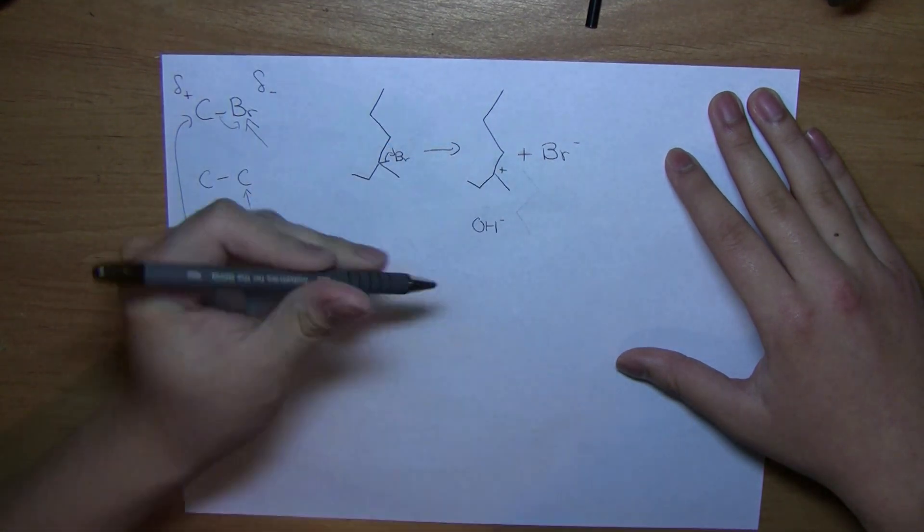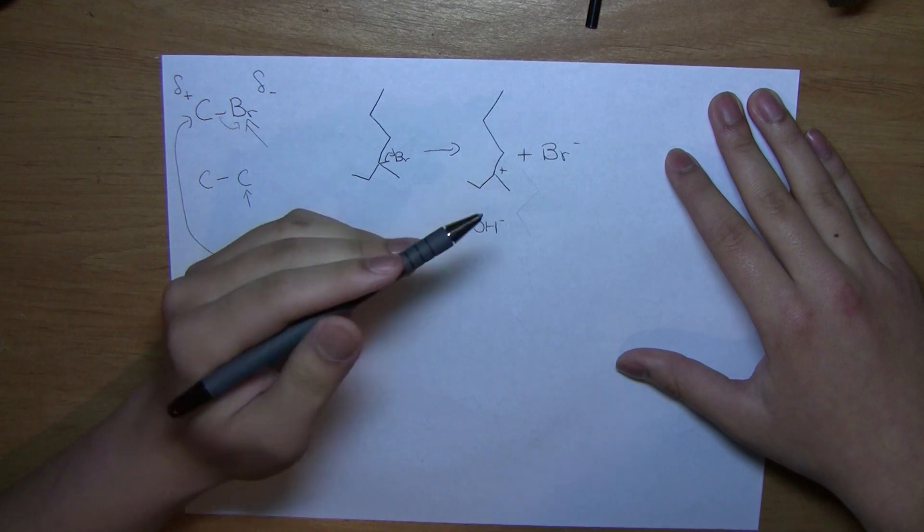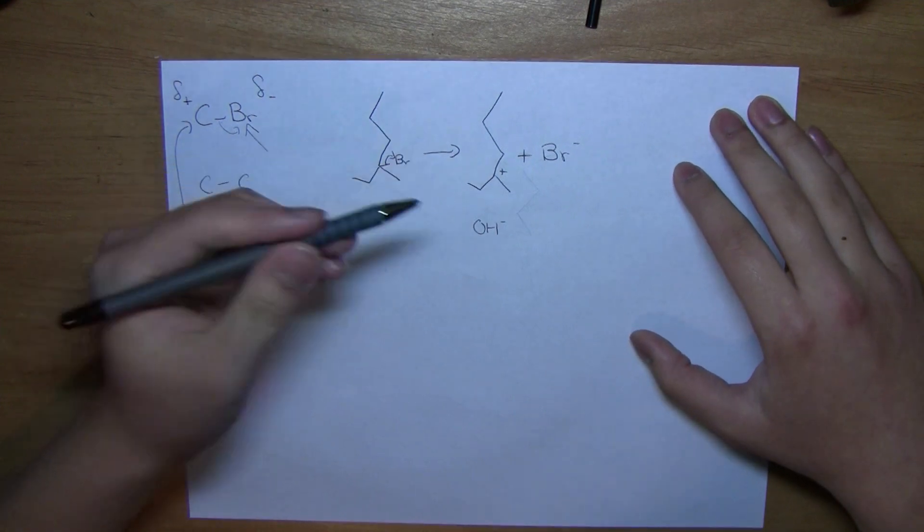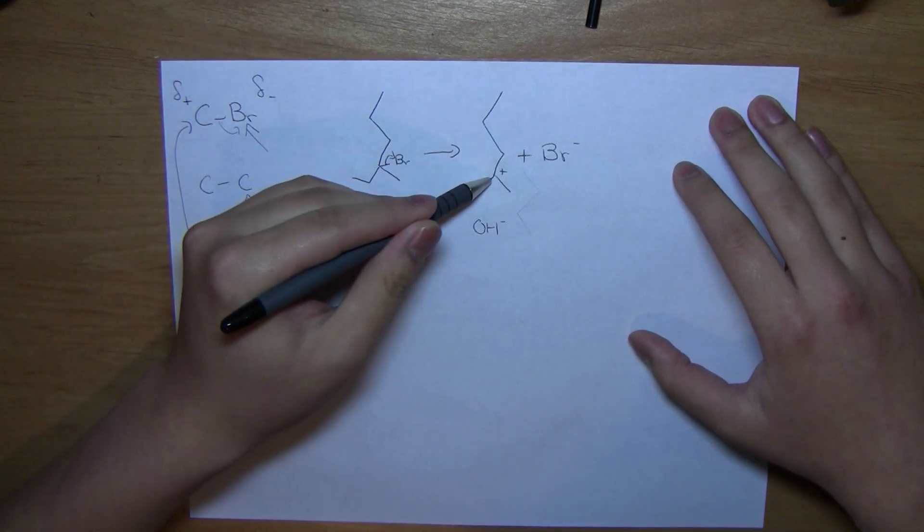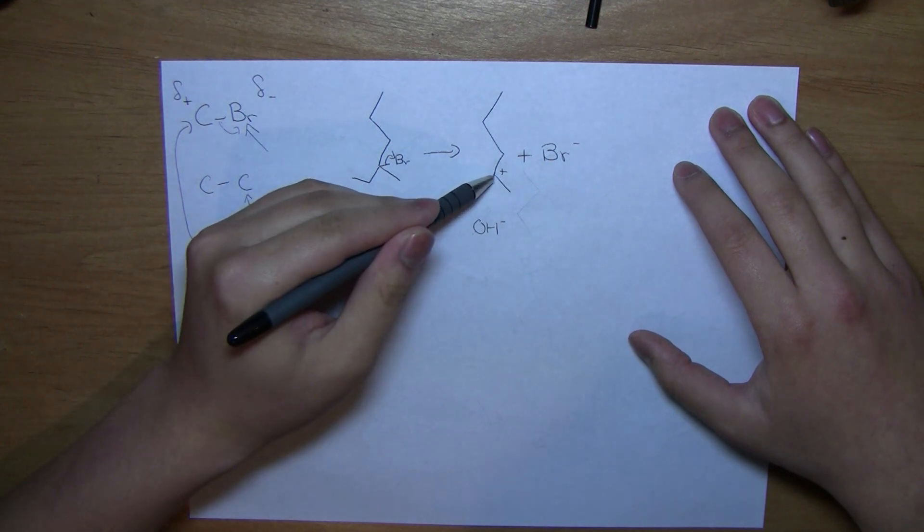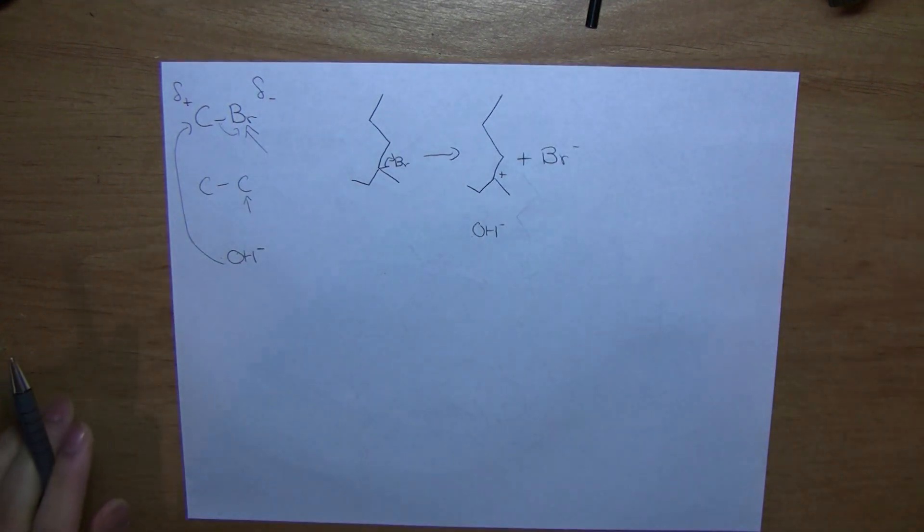Now, in order to do a substitution, we need a good nucleophile. So, let's use OH- like we did before. So, what can happen between this hydroxide and this carbon here? Well, we can have this hydroxide attack from either side because this carbon here is planar. So, let's get a better look at that.